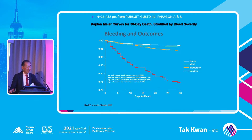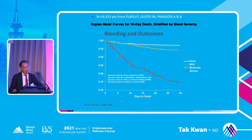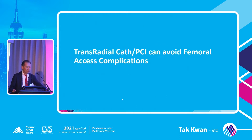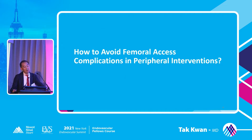The more bleeding you have, the worse the outcome — 30-day death rate increases significantly. This is a well-known slide by Dr. Rao from Duke. From mild bleeding to cerebral bleeding, the 30-day outcome is really bad. For coronary, we all learned that radial access and PCI can avoid femoral complications. From the peripheral standpoint, how can we decrease femoral access complications?